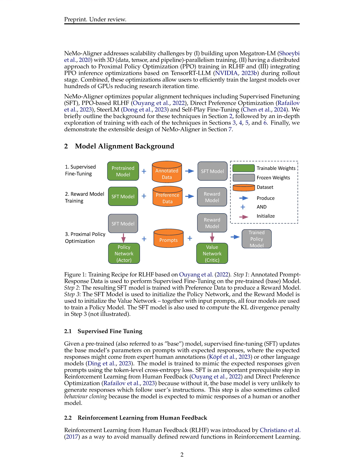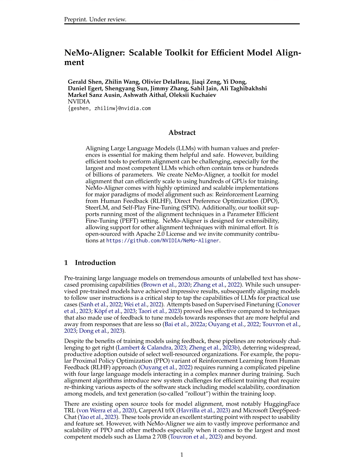Another limitation is the potential difficulty in fine-tuning the system for optimal performance, as indicated by the need for various optimizations and adjustments to improve training efficiency and model alignment. Furthermore, the reliance on human preferences for reinforcement learning may introduce biases or limitations in the training data, affecting overall model performance and generalization. Lastly, the need for significant computational resources — such as hundreds of GPUs — may limit the accessibility and practicality of implementing NEMO Aligner in all settings.